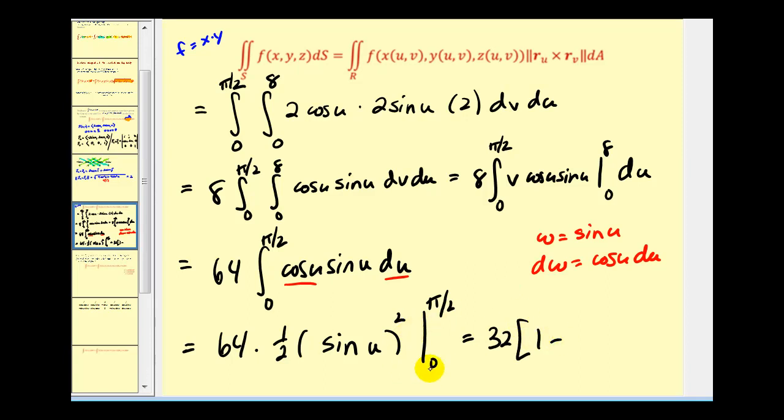And then the sine of pi over two is one. One squared is one minus sine of zero is zero. So it looks like we have a value of thirty-two for our surface integral using a parameterized surface.